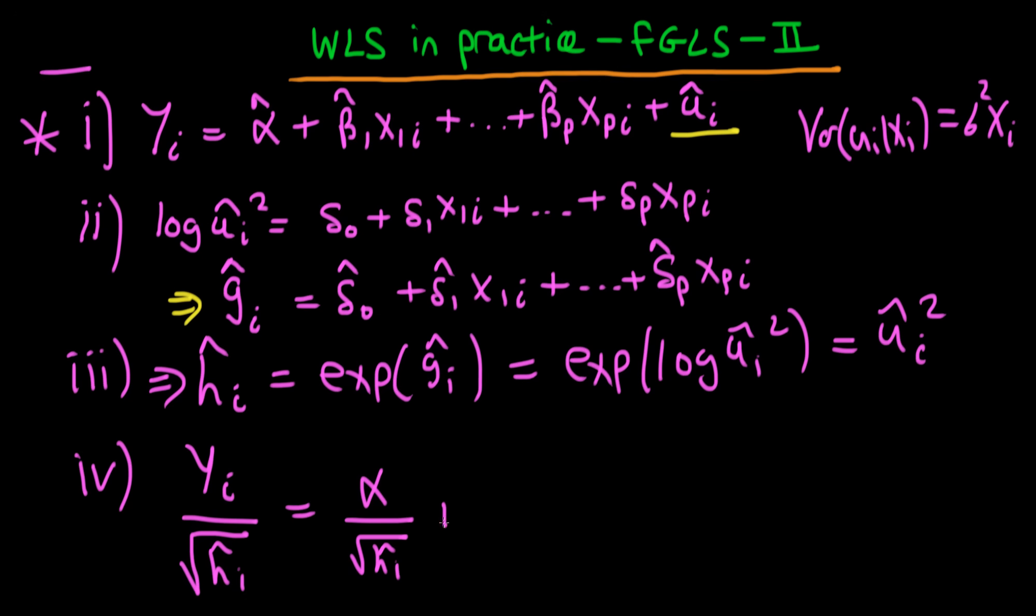And then what we do is we divide all things on the right hand side by √ĥᵢ as well, because whatever we do to the left we have to do to the right. And then we get a model which looks something like this, and it wouldn't be hard to generalize this to higher terms of xᵢ.